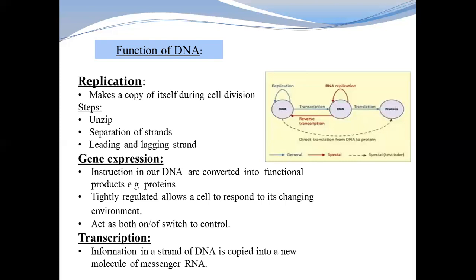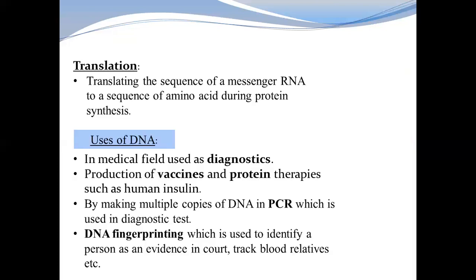Transcription is the process when DNA is copied to produce RNA. This process uses an enzyme called RNA polymerase. After transcription comes translation — translation is the process where a messenger RNA sequence is translated into an amino acid sequence, ultimately resulting in protein synthesis.